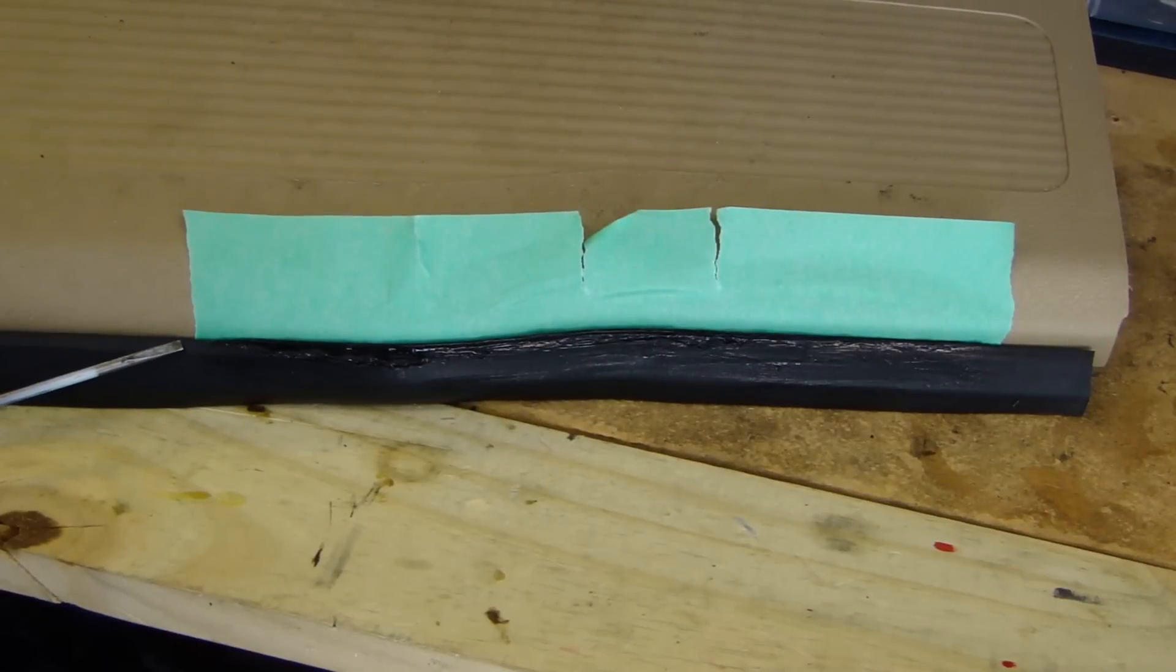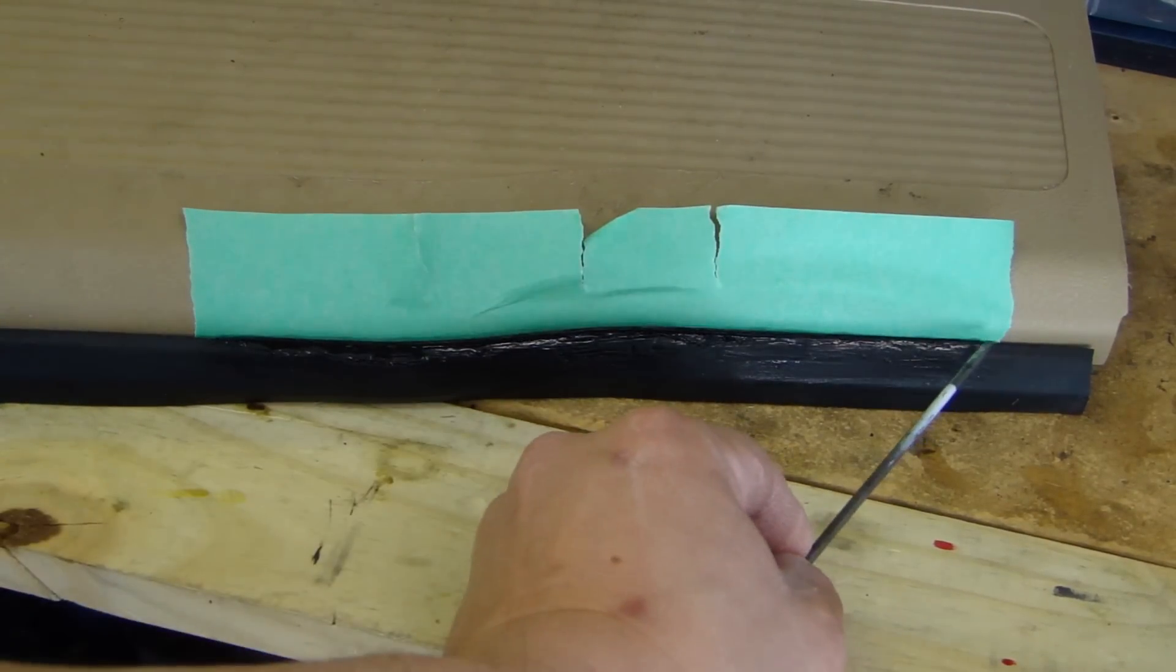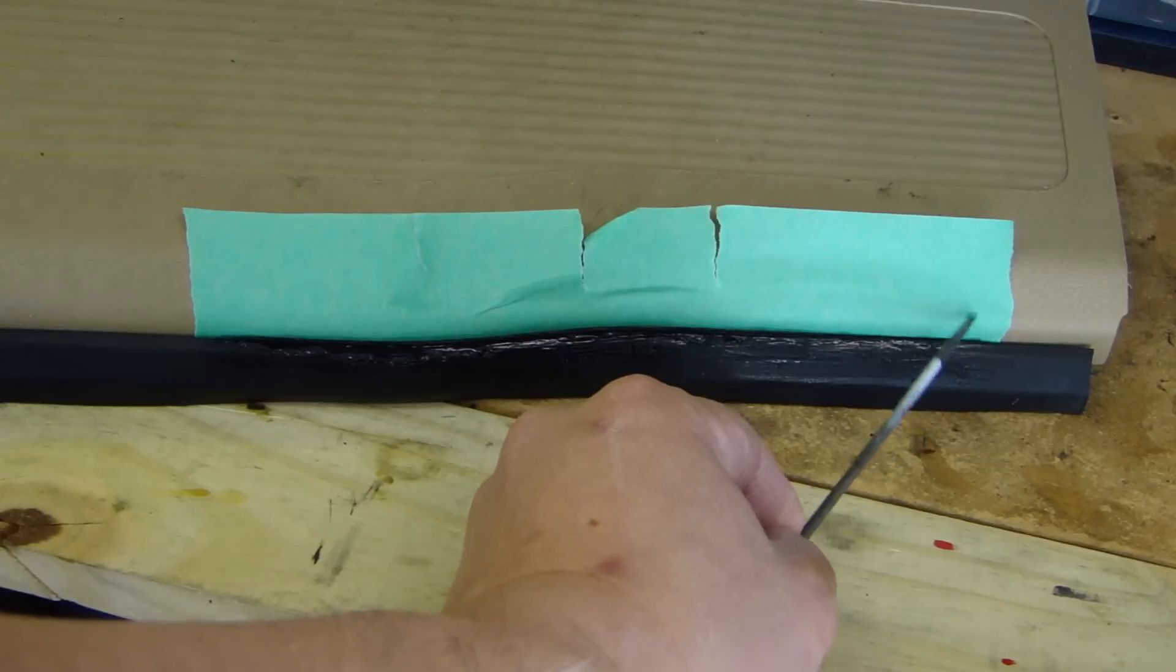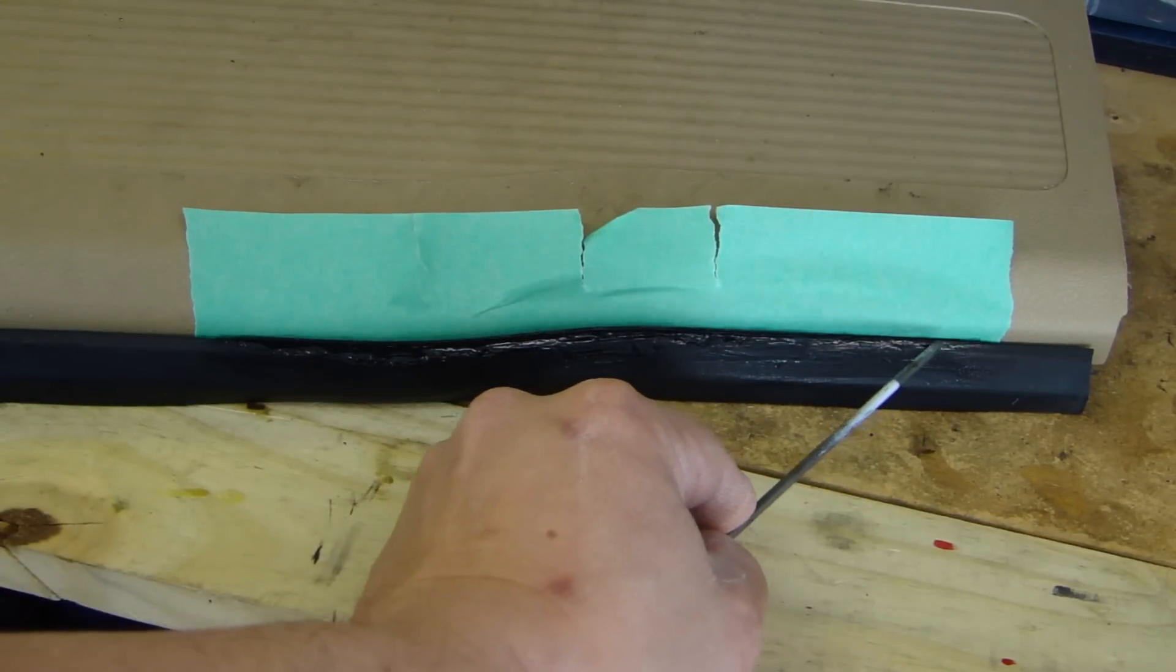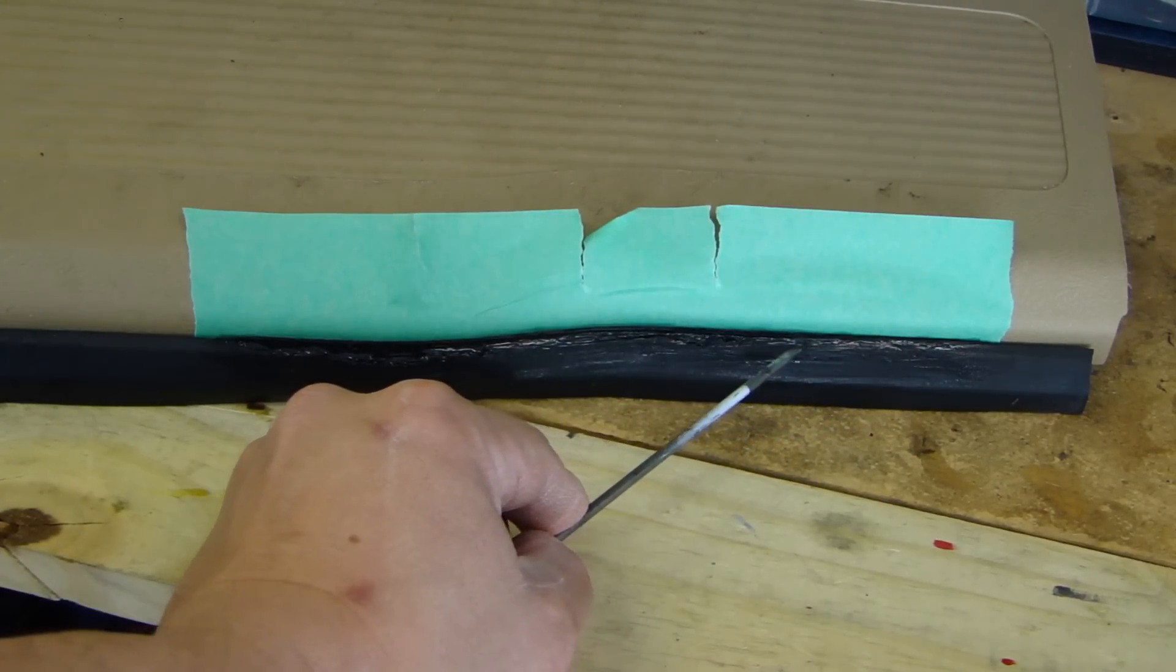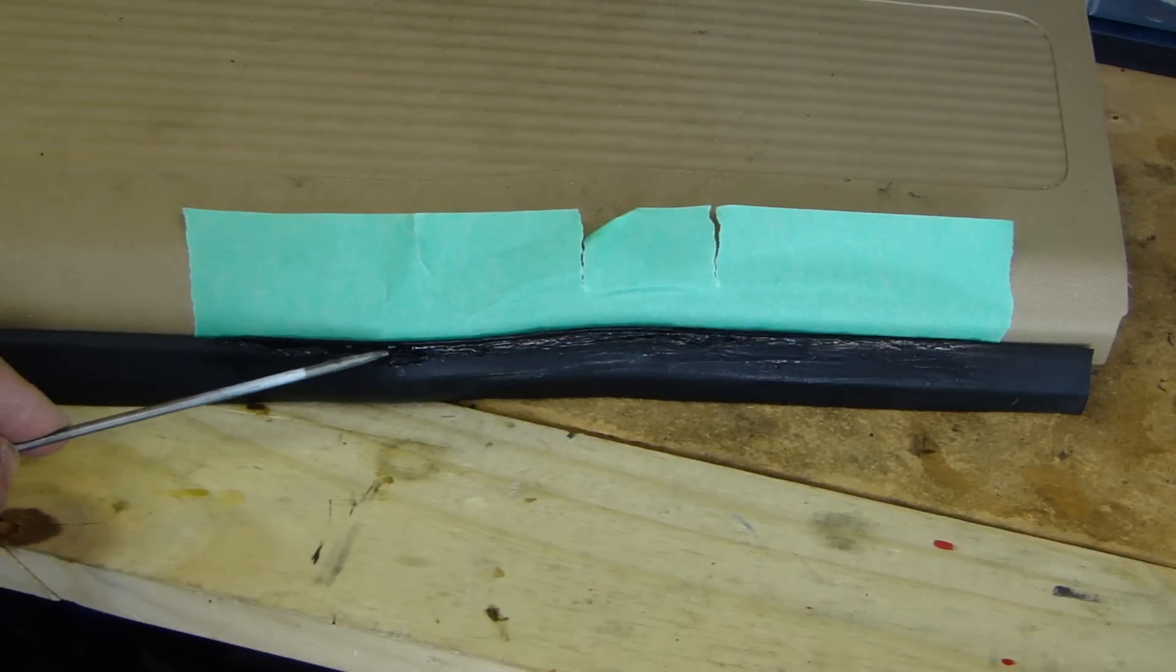Now before I begin, let me show you the other side that I've worked on already. Now right here, starting at where my screwdriver is pointing all the way to here, this was damaged really bad. Big chunks of rubber were missing, and like over here, this amount of rubber was all gone. Same as here—about maybe half an inch of rubber all missing.